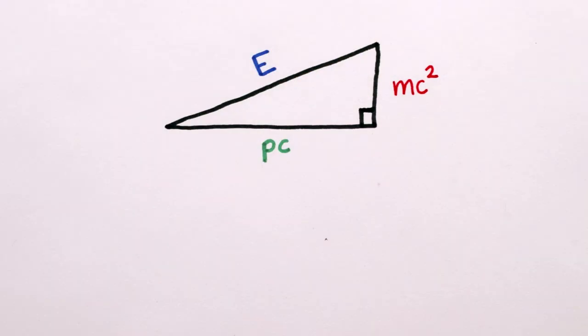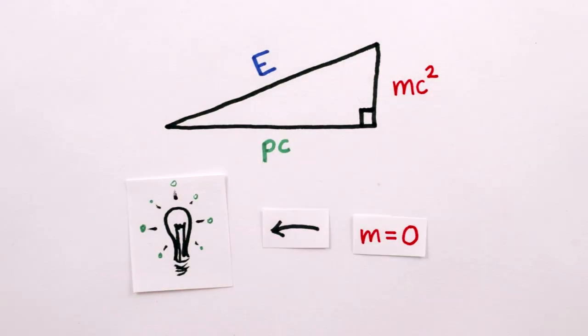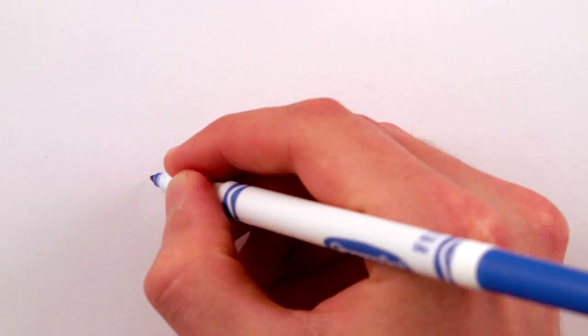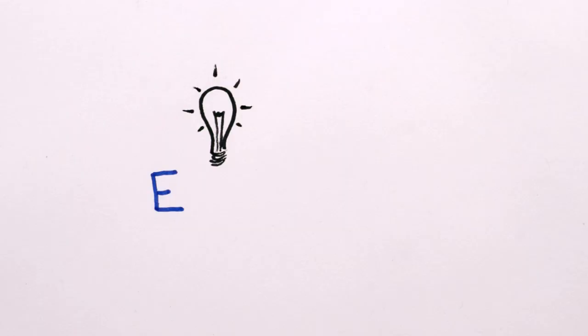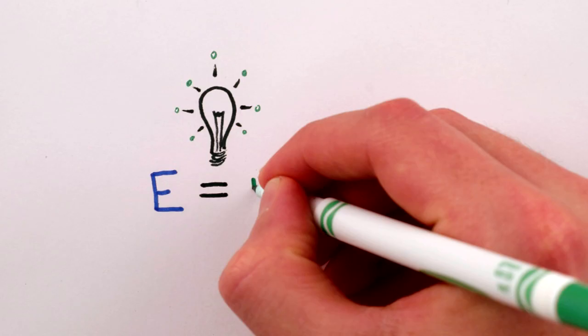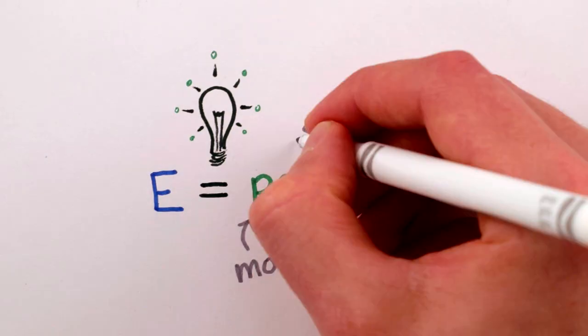On the other hand, if the particle in question is massless, like light, then mass is zero, and we get E equals p times c. This tells us that the energy of a massless particle, like a photon of light, is the same as its momentum, up to a factor of the speed of light.